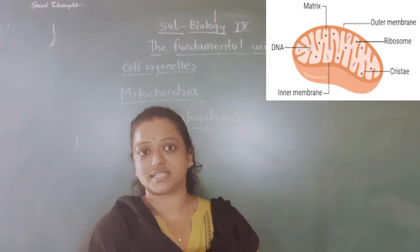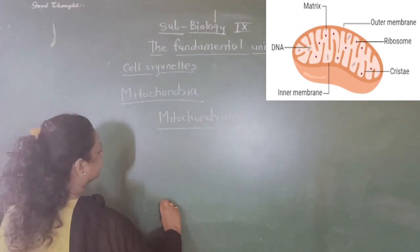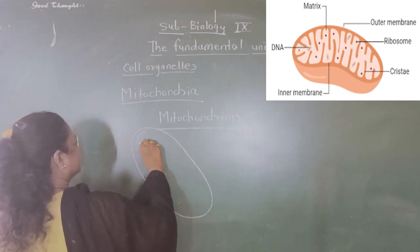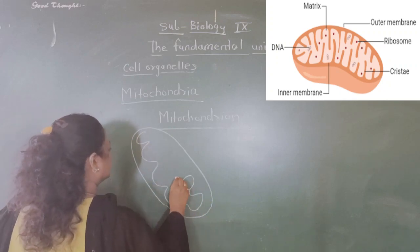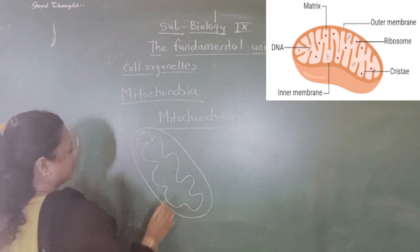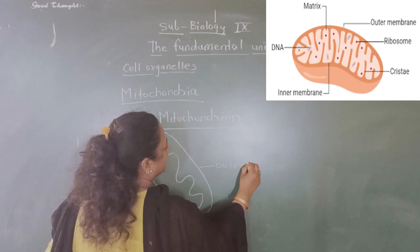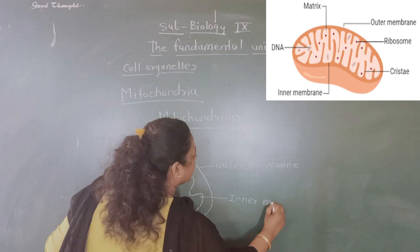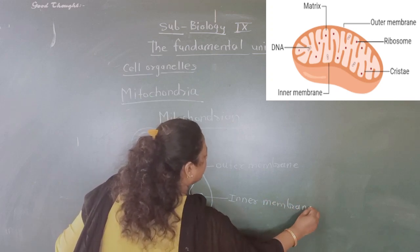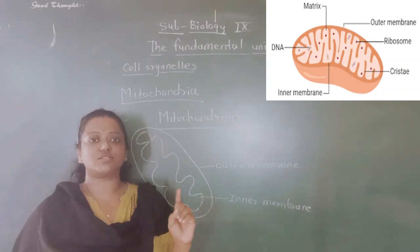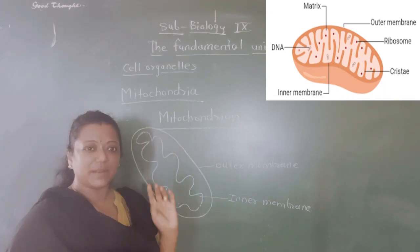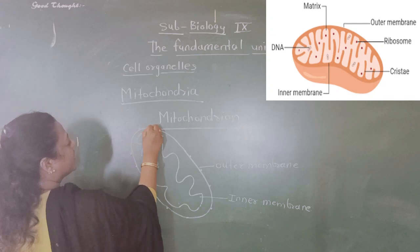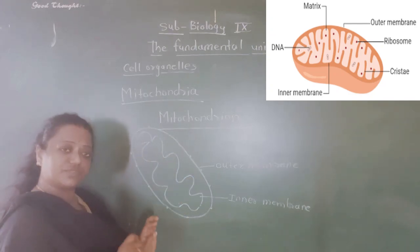Now what is this mitochondria? How the structure is designed — I shall draw a figure for you. This is the outer membrane of the mitochondria, and this is the inner membrane of the mitochondria. The outer membrane is a plain membrane and it has small pores on it.